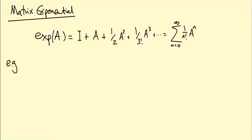Here's our example. Let A be the matrix [[0, -θ], [θ, 0]].